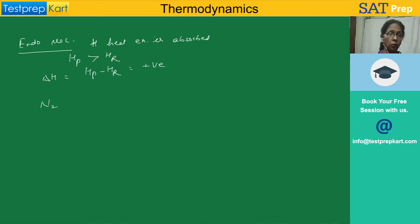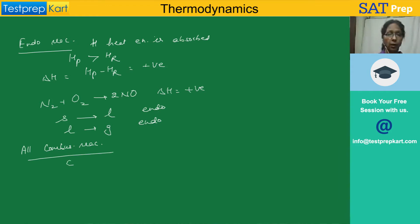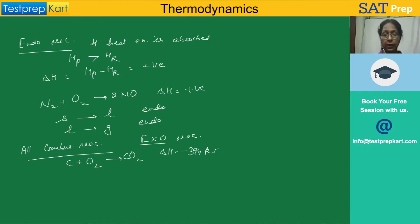For example, N₂ + O₂ → NO is an endothermic reaction. Melting of a solid is endothermic, and evaporation is endothermic. But if you take all combustion reactions, they will be exothermic — for example, C + O₂ → CO₂ is an exothermic reaction. There is no exception: all combustion reactions will be exothermic.